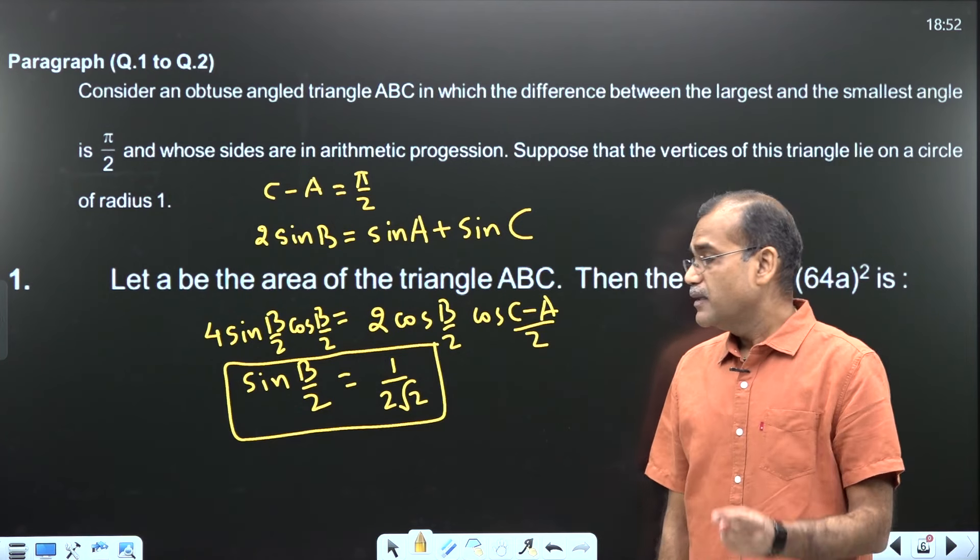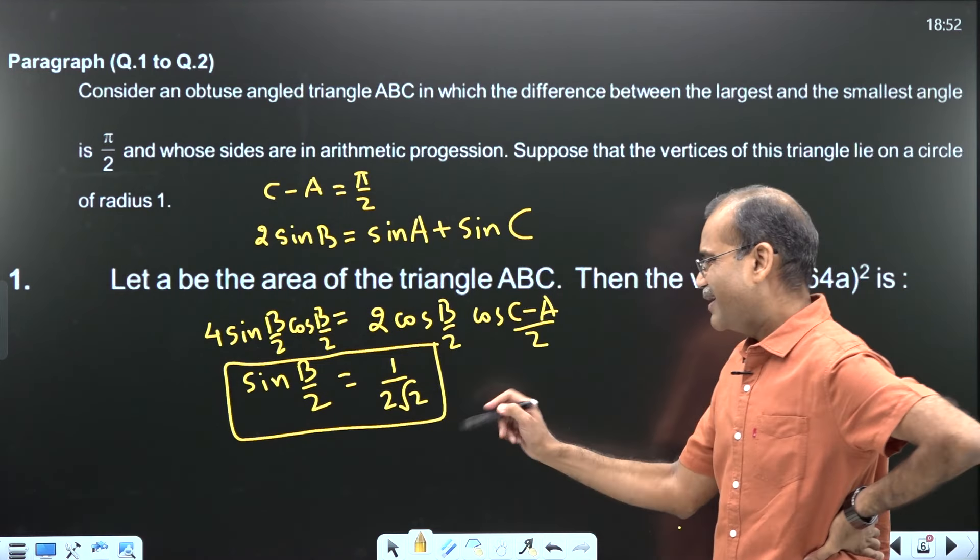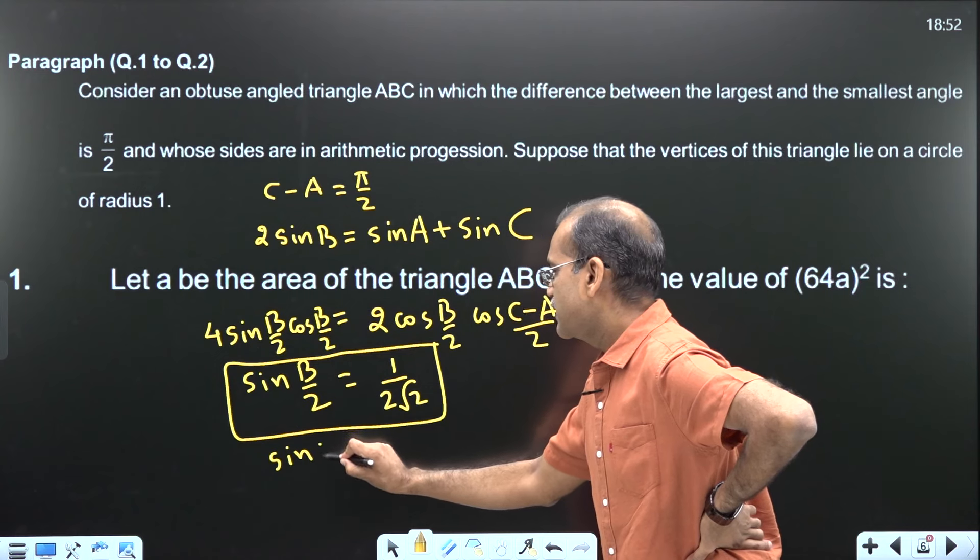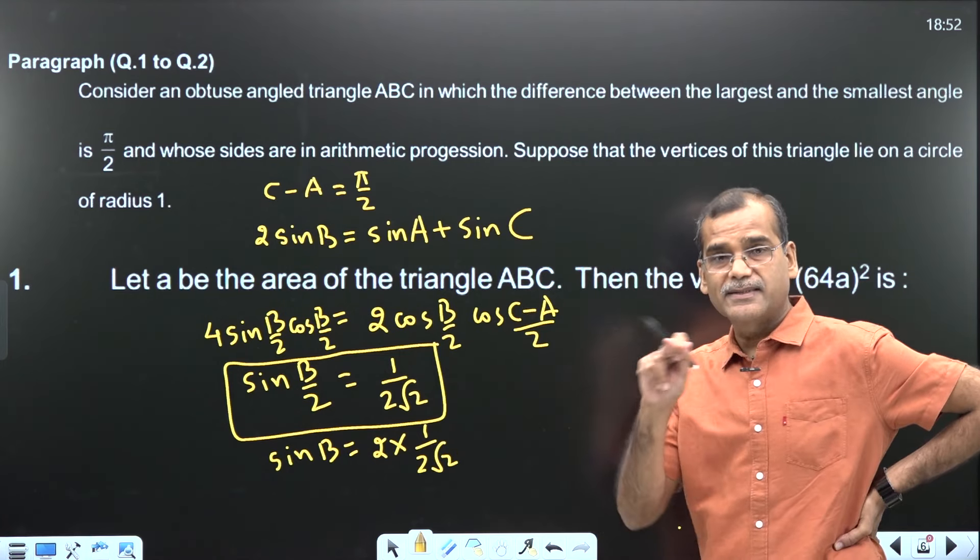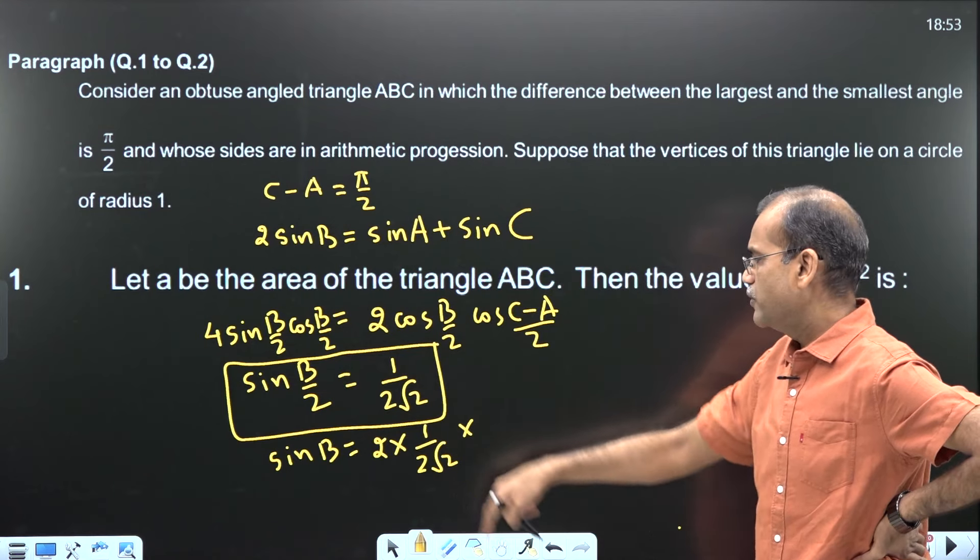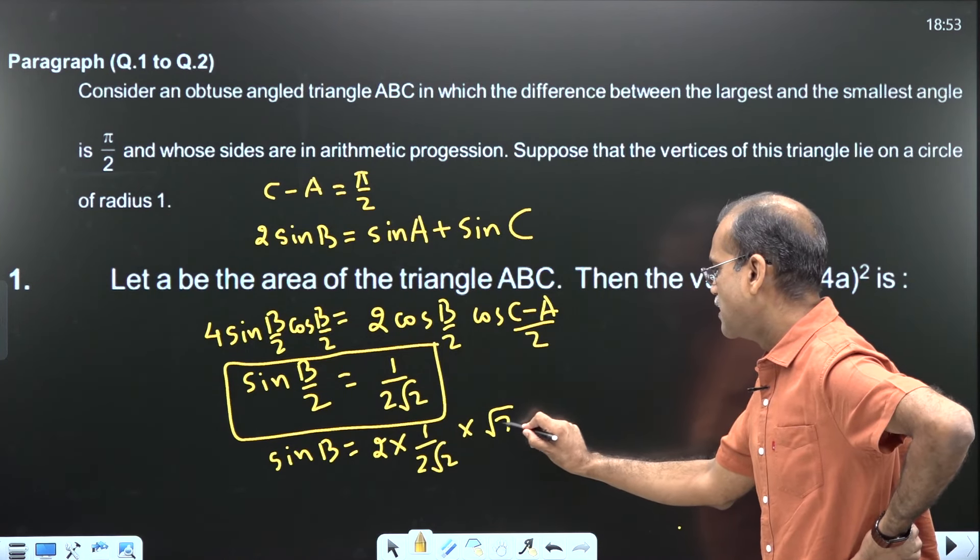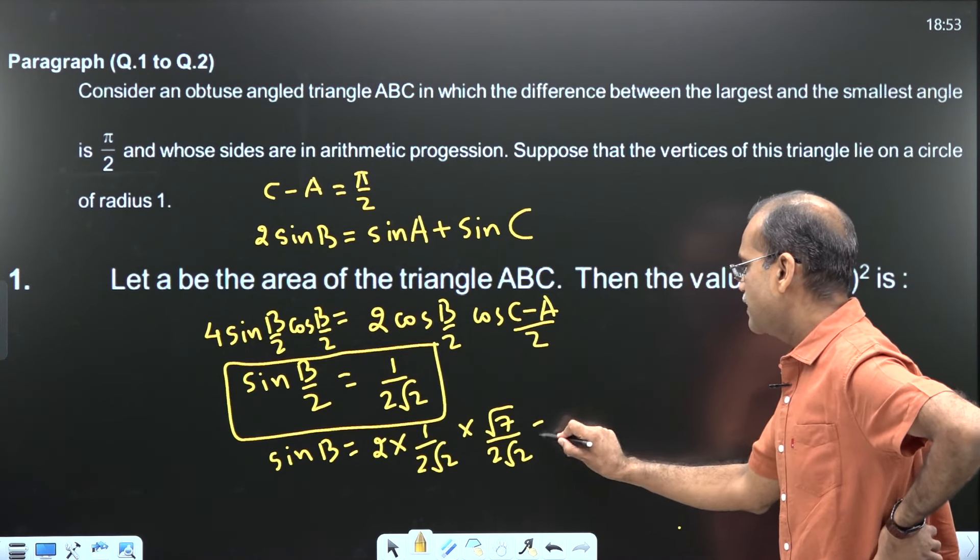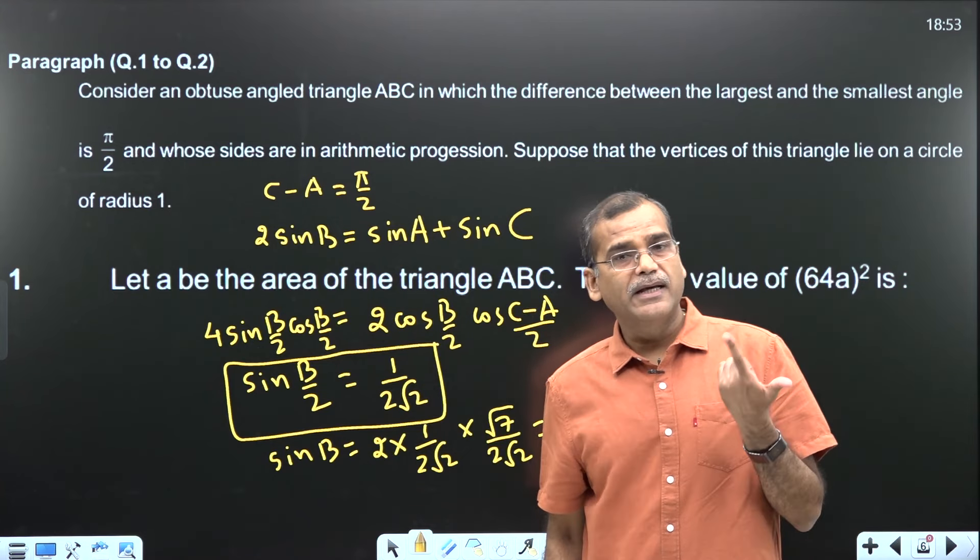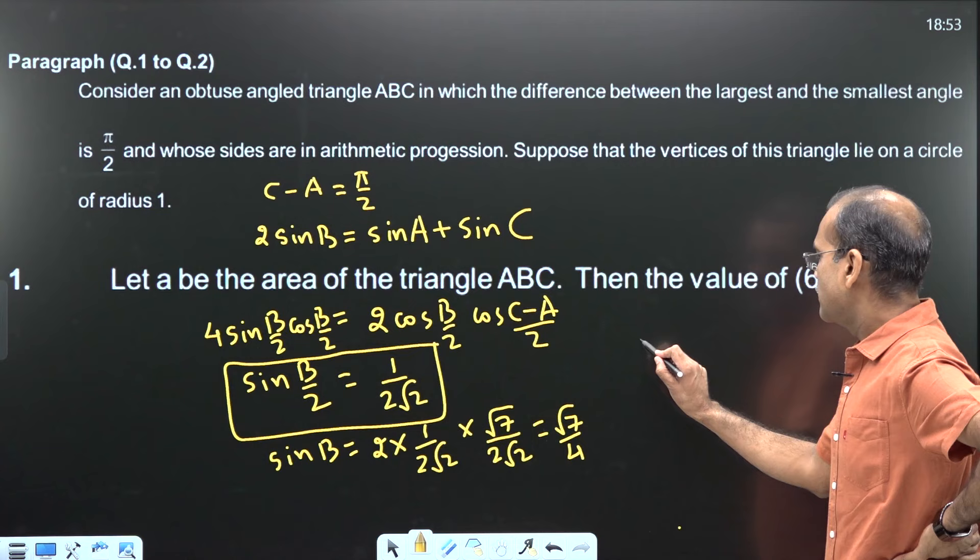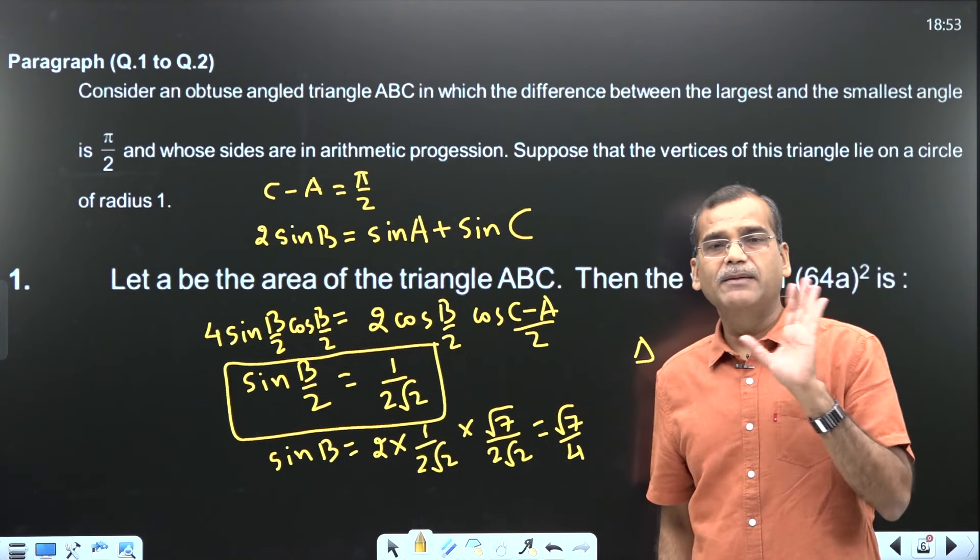So far everything is okay. Now I guess with the help of this I can obtain sin B. So sin B is 2 sin B by 2 cos B by 2. My target is area into cos B by 2. Cos B by 2 you directly do: root of 1 minus 1 by 8 under root, so root 7 by 2 root 2. So it comes out root 7 by 4. There shouldn't be any problem with you.